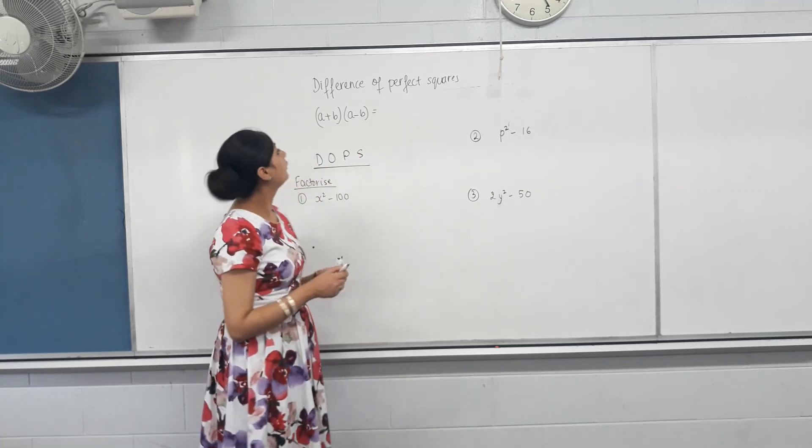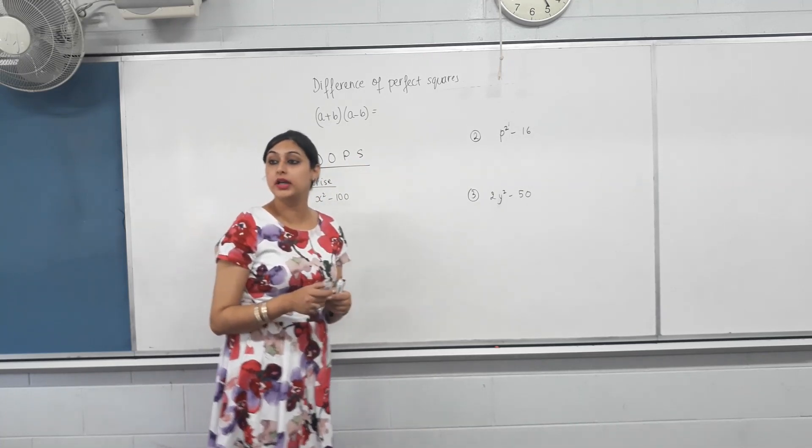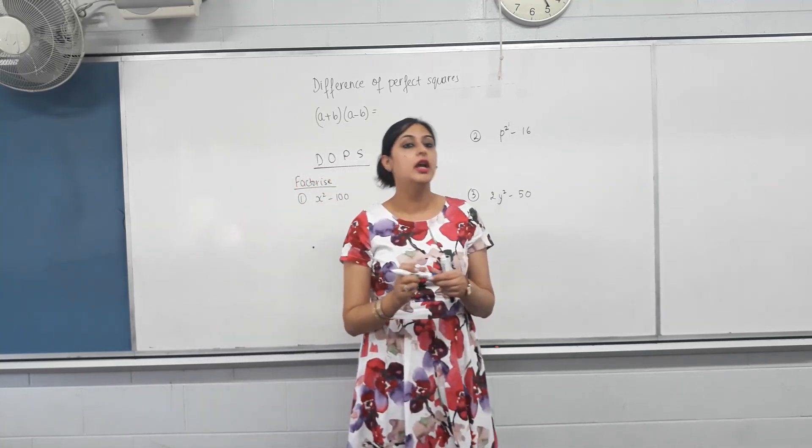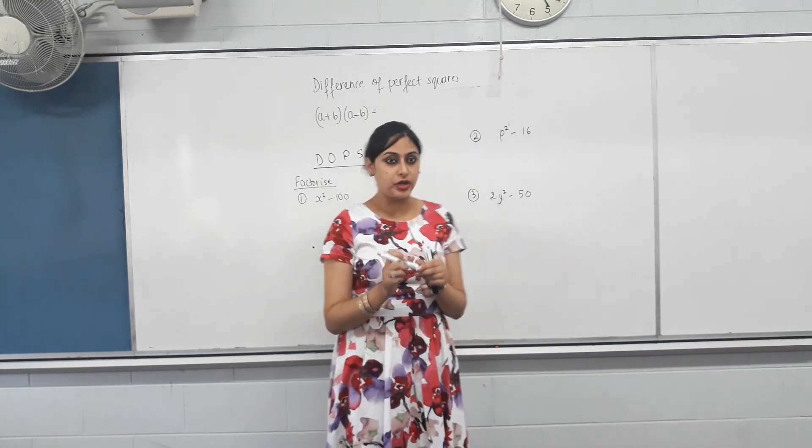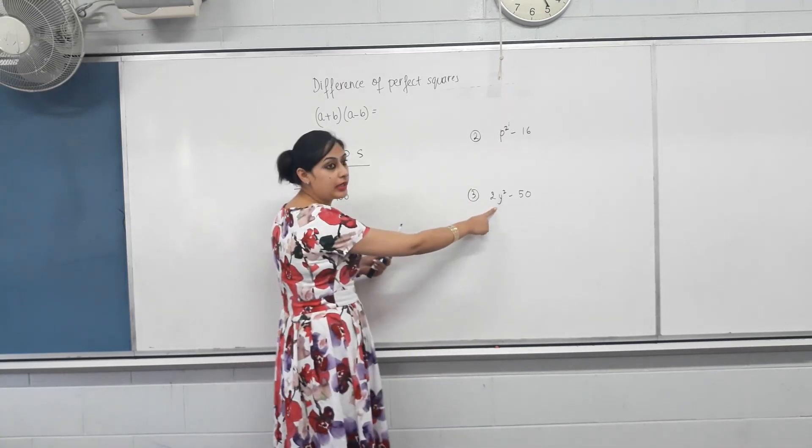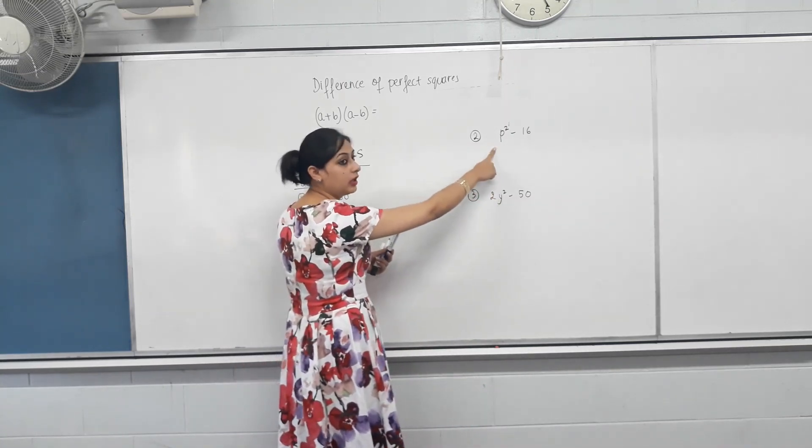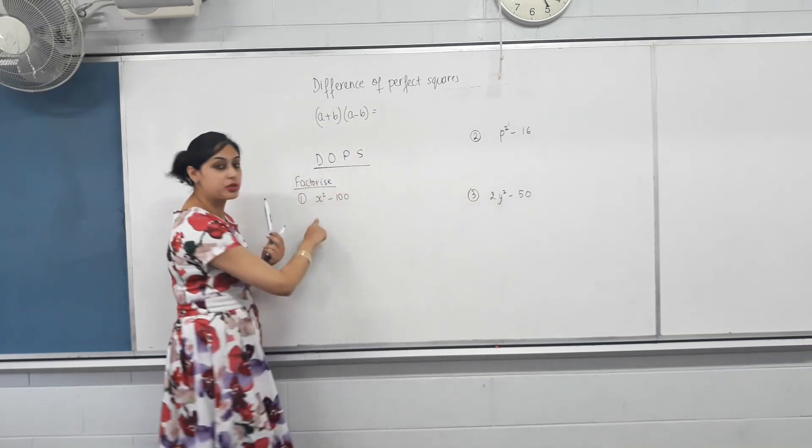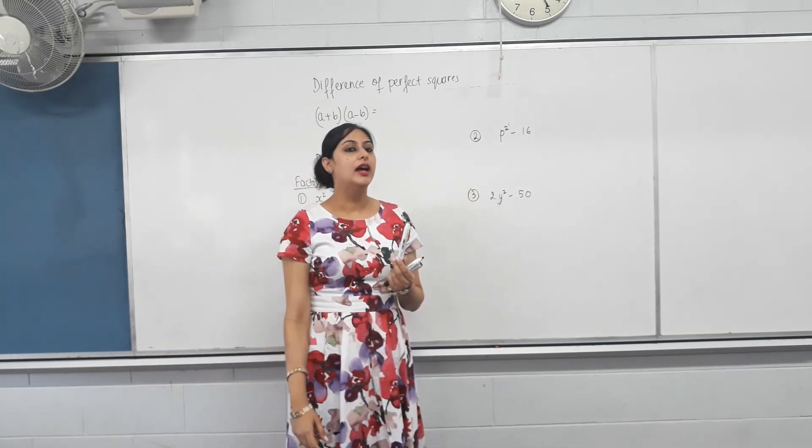Okay, we are continuing on with factorization. We do have a quadratic expression. Do we have a squared term? Yes. B squared? Yes. Y squared? Yes. X squared? Yes. Are these quadratic? Yes. Kajan? Yes.